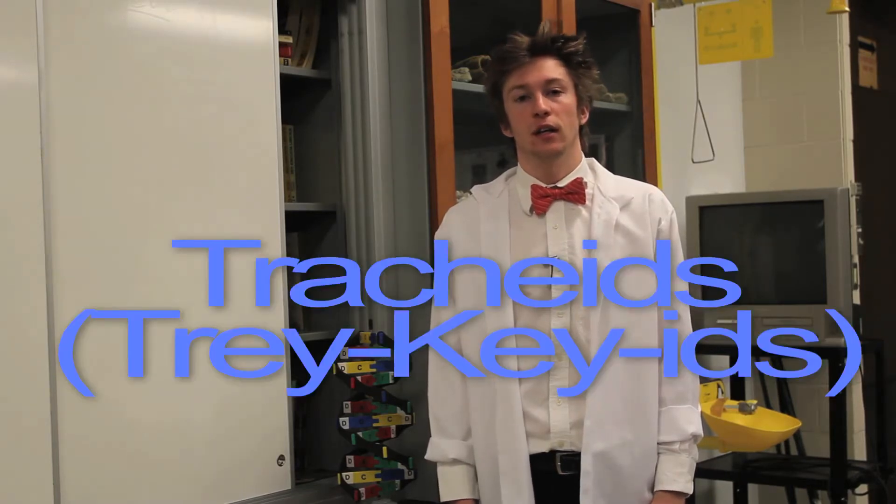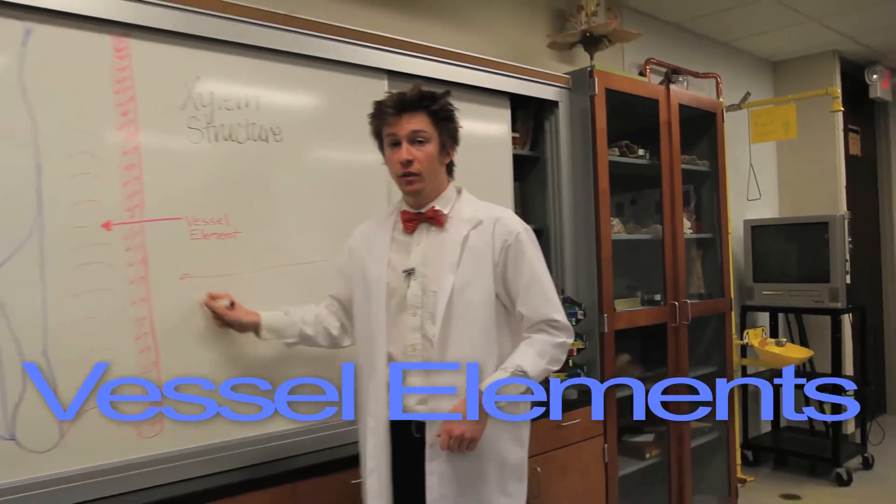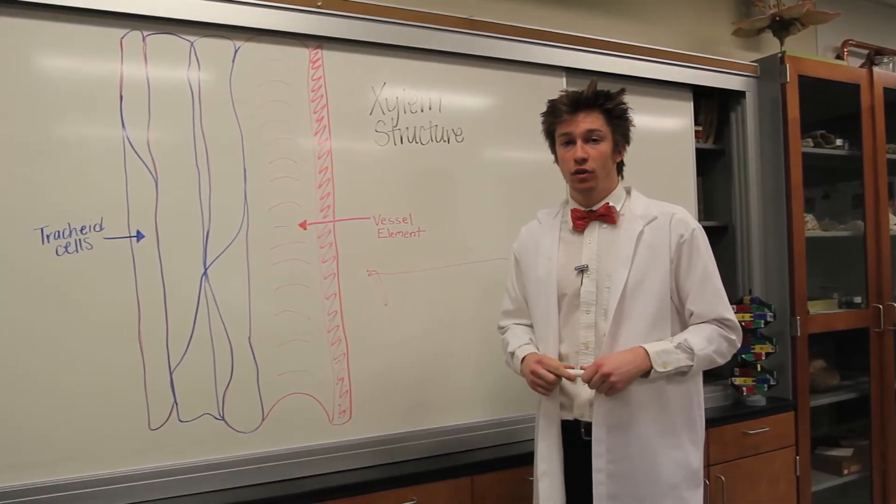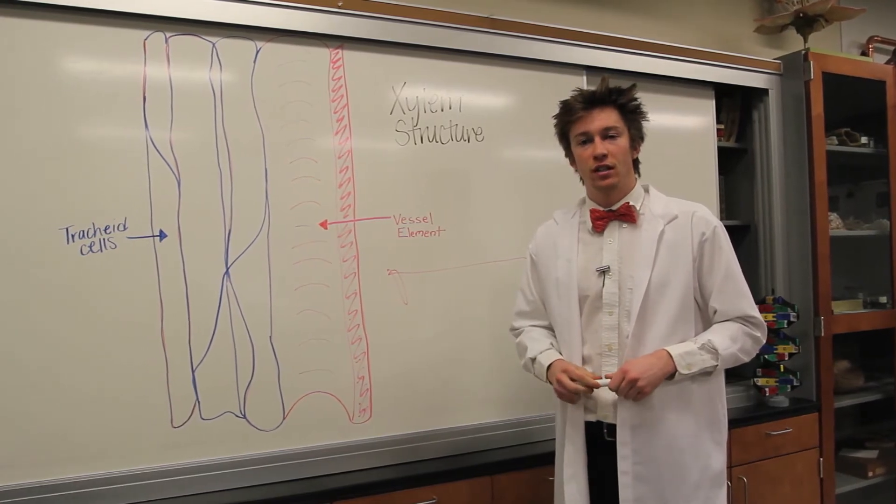Tracheids. Water moves between the tracheids cells only through bordered pits. More advanced dicots, however, have vessel elements. These are broader, shorter, and have real-life holes, which are called perforation plates in their end walls.